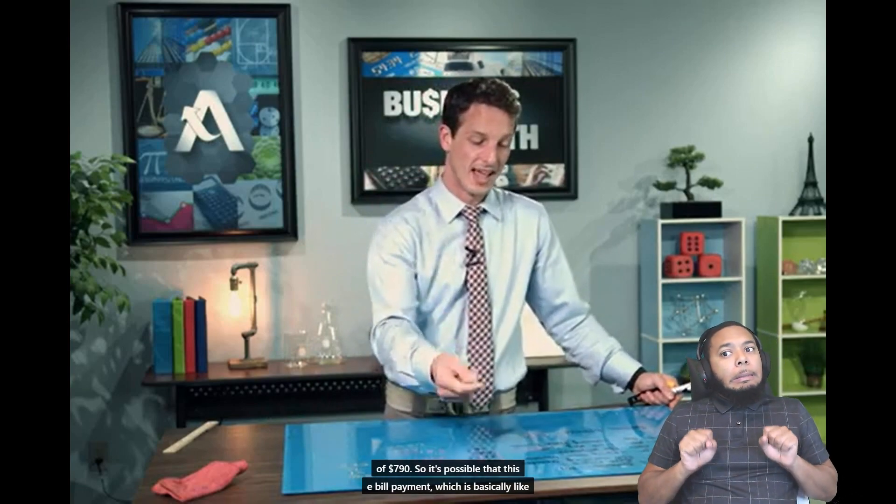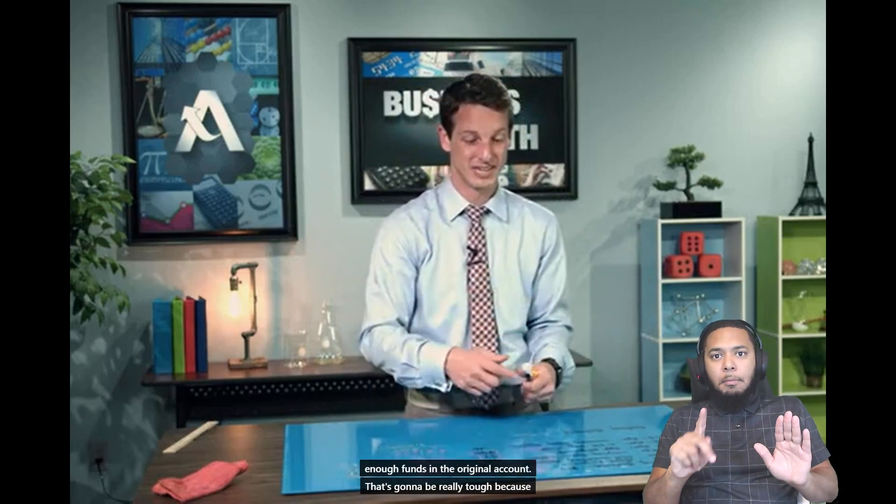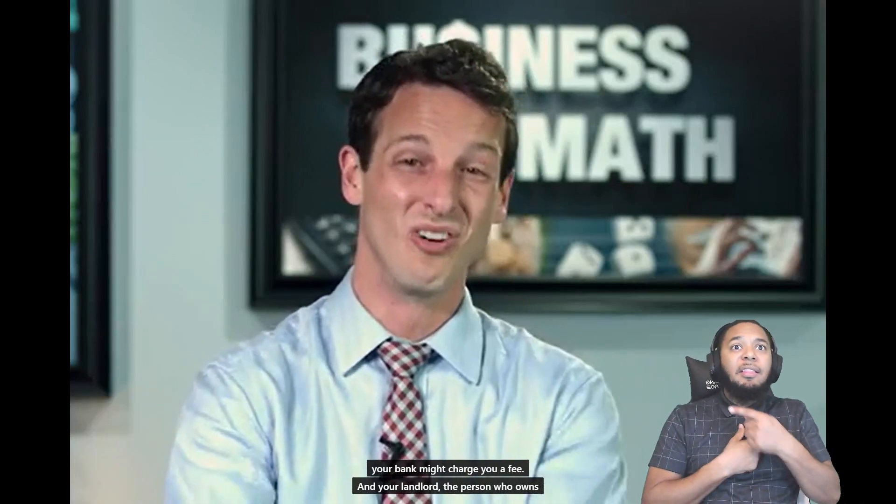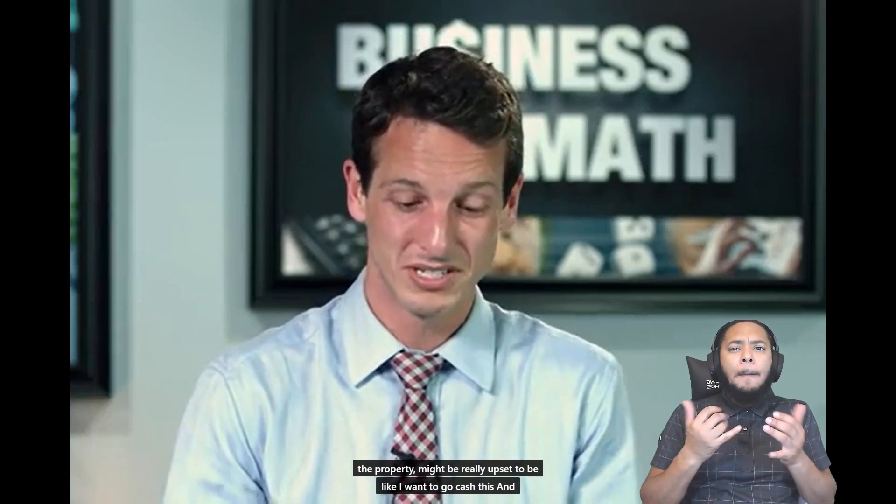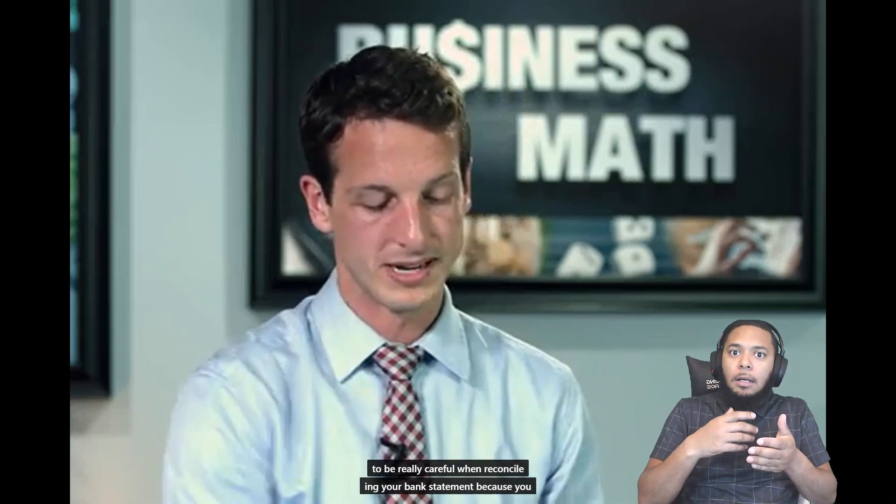Something really bad happens here. Yes, you get paid the next day for your paycheck, but $701 isn't sufficient to cover your rent payment of $790. So it's possible that this e-bill payment, which is basically like a check that gets mailed to the owner of the house you're living in, it's not enough to cover it. So when they go to cash it, they can't. The bank says there aren't enough funds in the original account. That's going to be really tough because your bank might charge you a fee and your landlord might be really upset. This all goes to show you that you have to be really careful when reconciling your bank statement because you want to have positive funds in your bank account at all times.